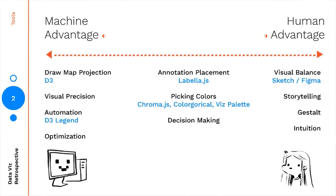Here I've displayed examples of tools across this entire spectrum. Even on the human advantage side we have tools like Sketch and Figma that help us make those decisions, but leave much more of the decisions in the person's hands. I think we've done a great job in data visualization in pushing many things over to the machine advantage, and what I'm most interested in today is understanding this gray area in between.